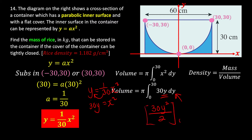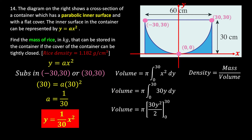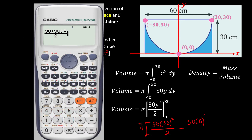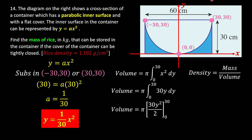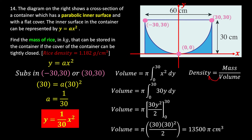We integrate with limits 0 to 30: V = π[30y²/2] from 0 to 30. Substituting the upper limit: 30 × (30)²/2 = 30 × 900/2 = 13,500. Subtracting the lower limit (which equals 0), we get V = 13,500π cm³.